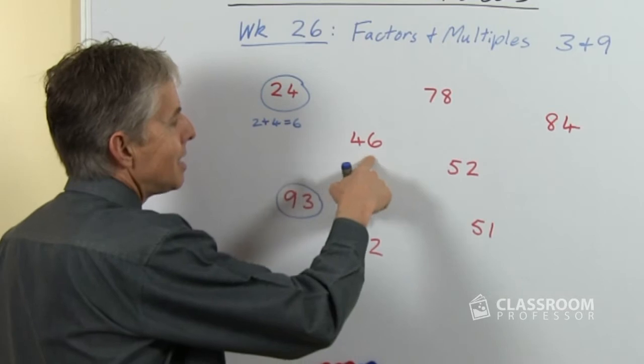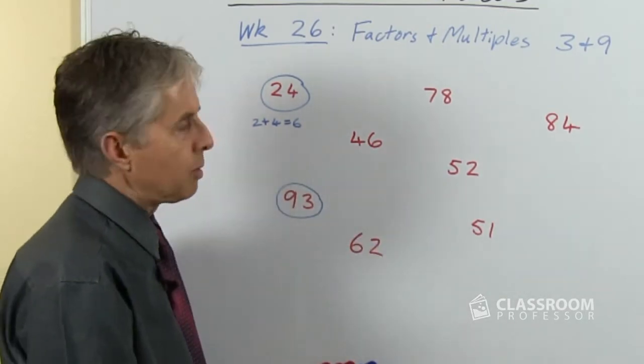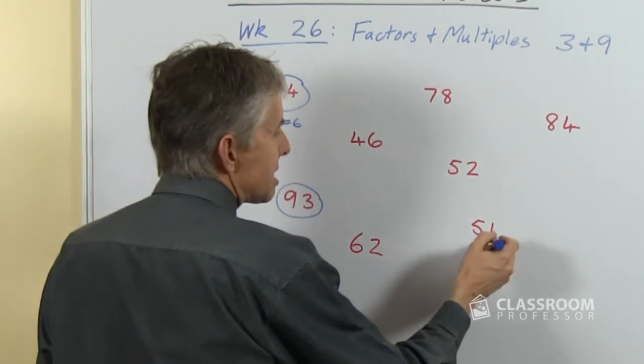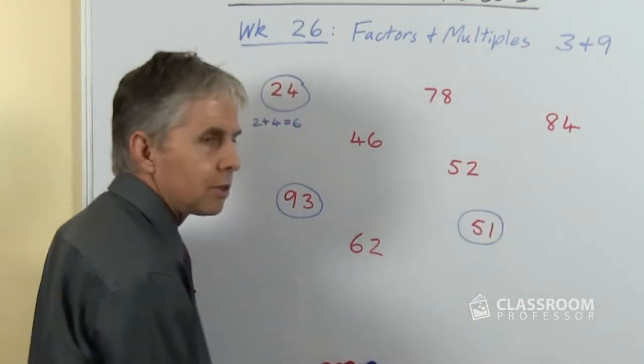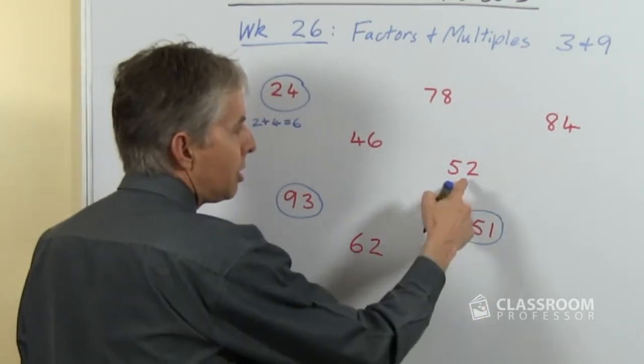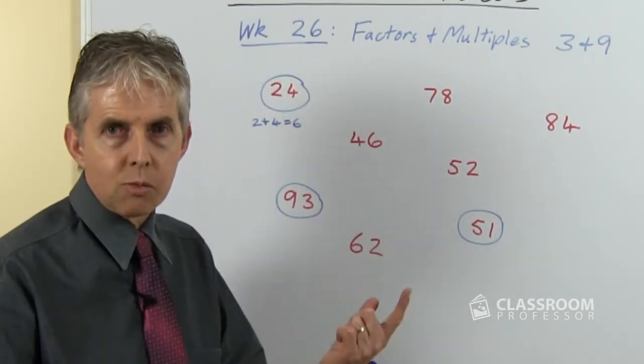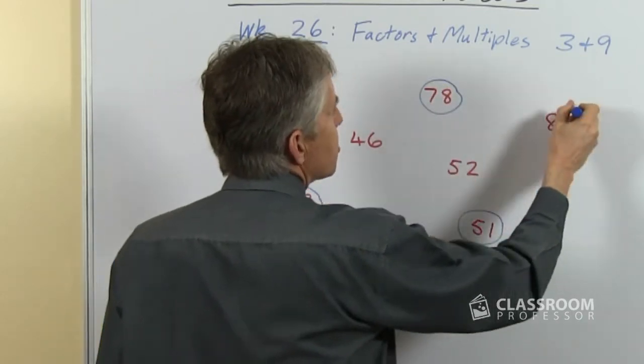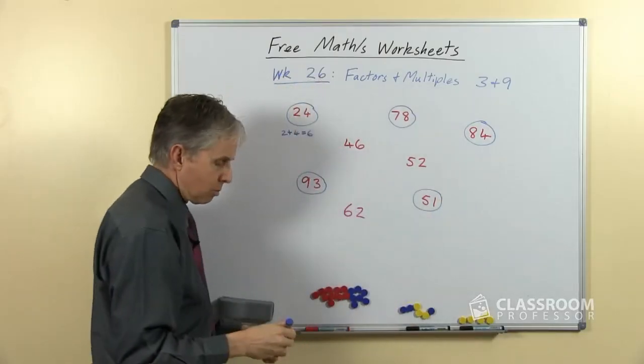Let's look at the others. 4 plus 6 is 10, so that's not a multiple of 3. 6 and 2 is 8, neither is that. 5 and 1 is 6, so that's good, that is a multiple of 3. If you know that one, you don't even have to check 52 because that's 51 plus 1 more, so that can't be a multiple. 7 plus 8 is 15, 8 plus 4 is 12, there's 2 more multiples.